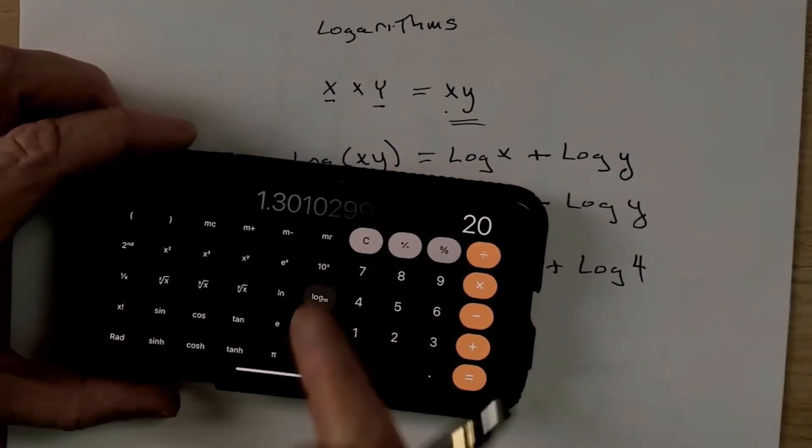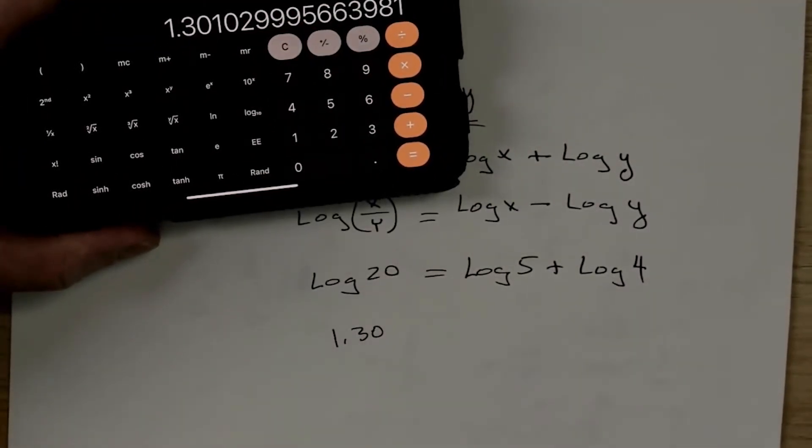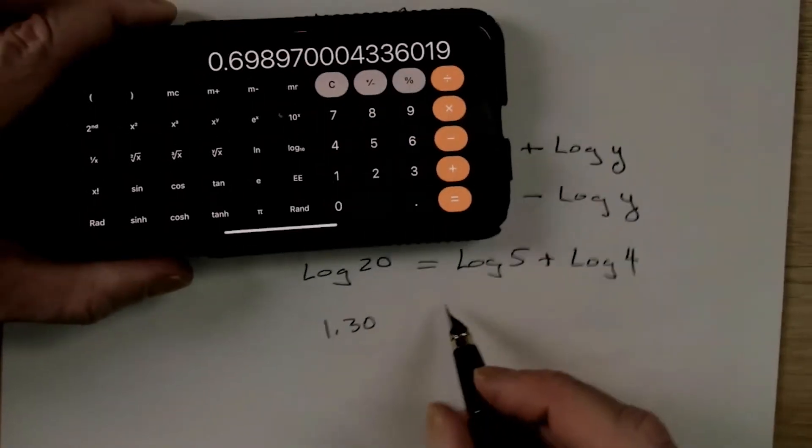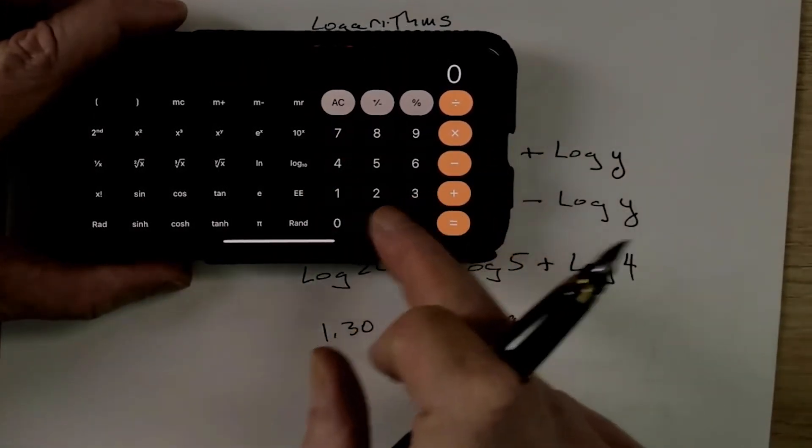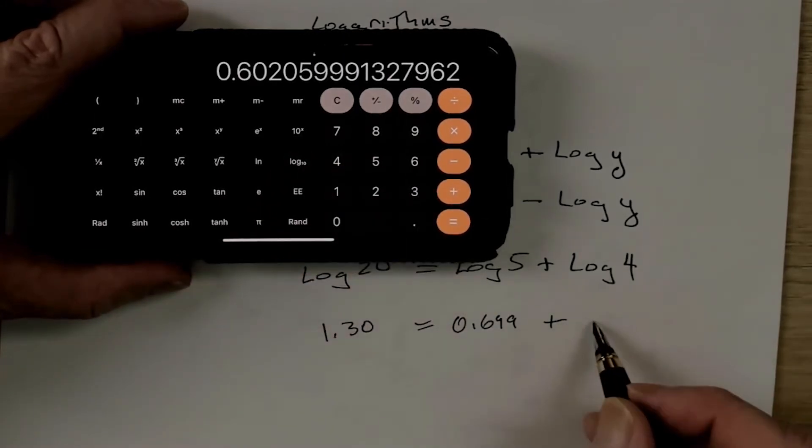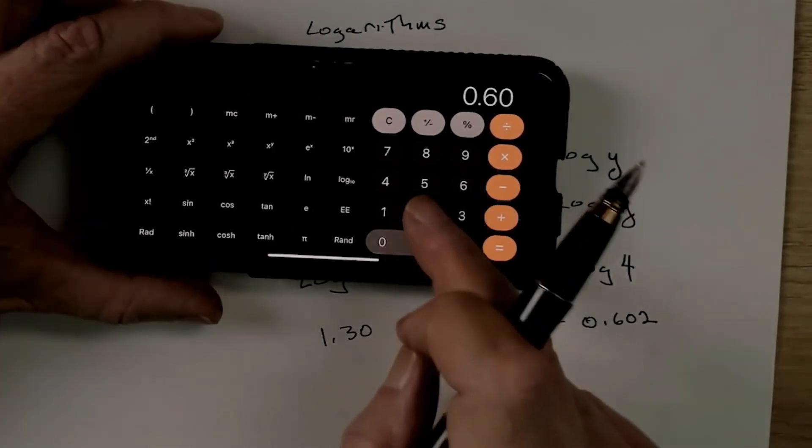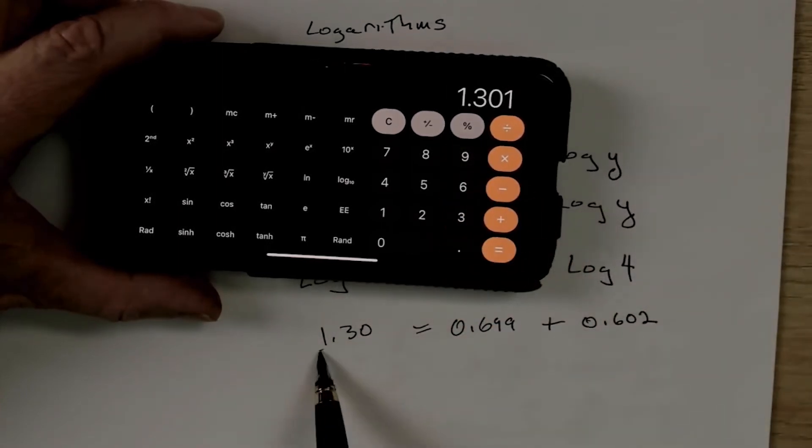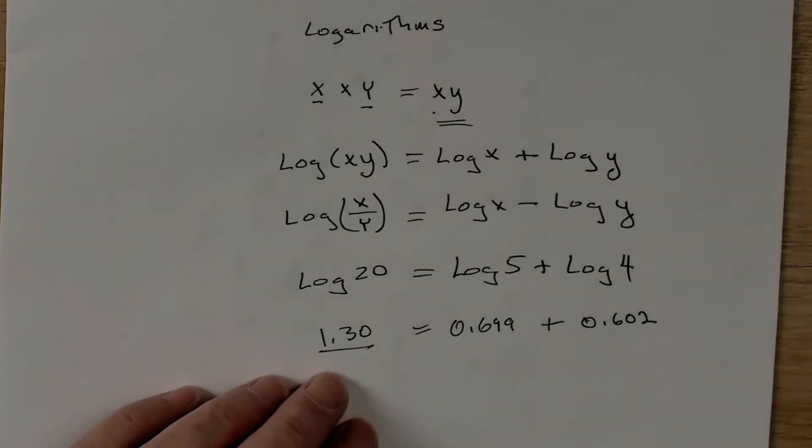5 log equals 0.699 plus the log of 4. So, let's take 0.602 plus 0.699 and that will equal 1.30. You can check this for yourself with division, but it works exactly the same way.